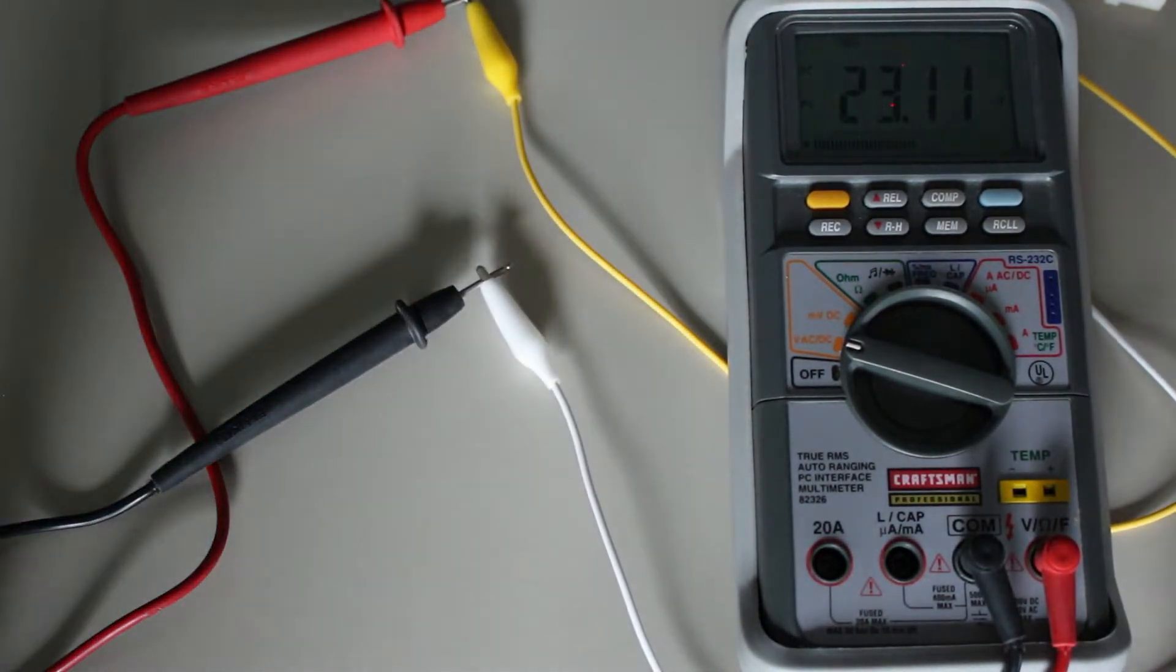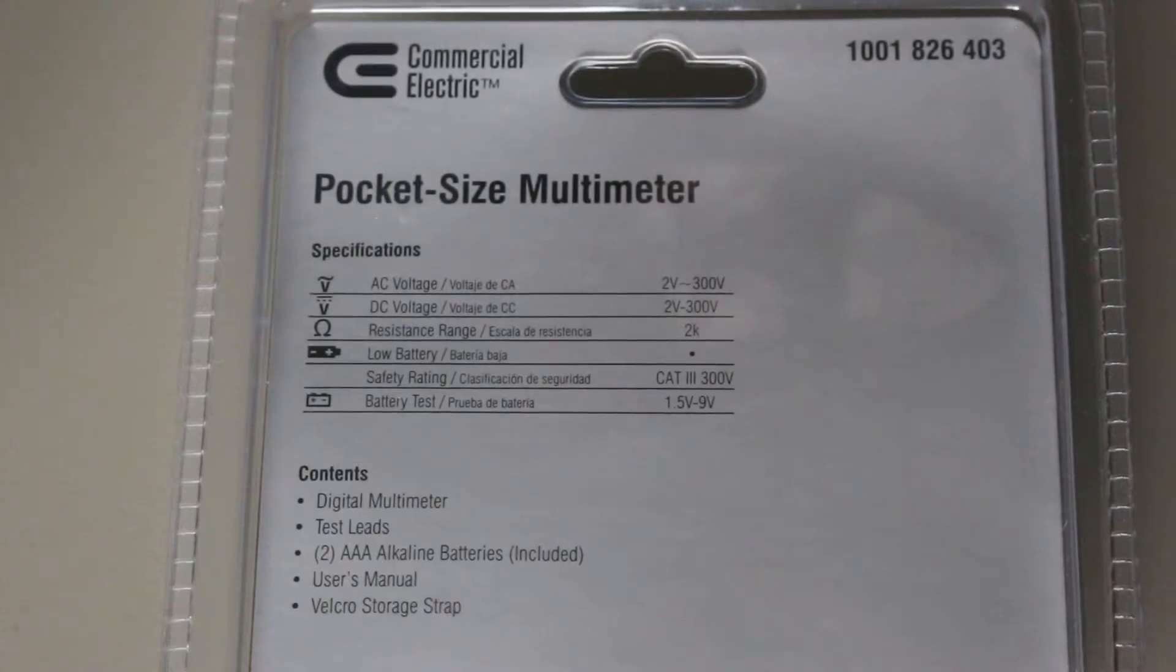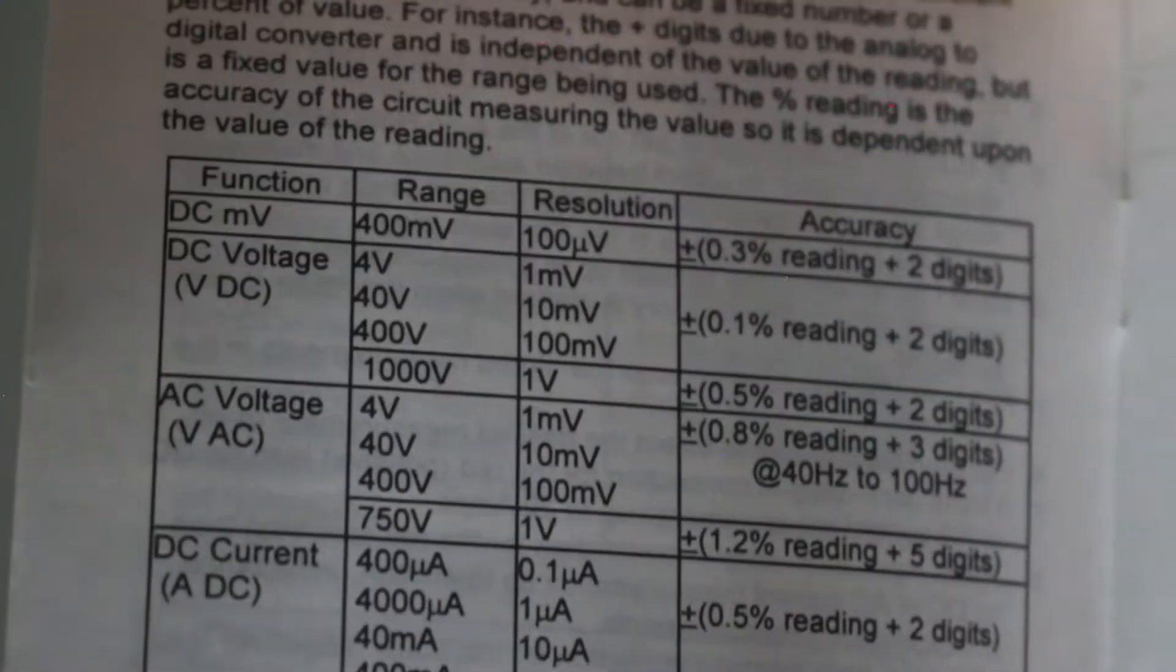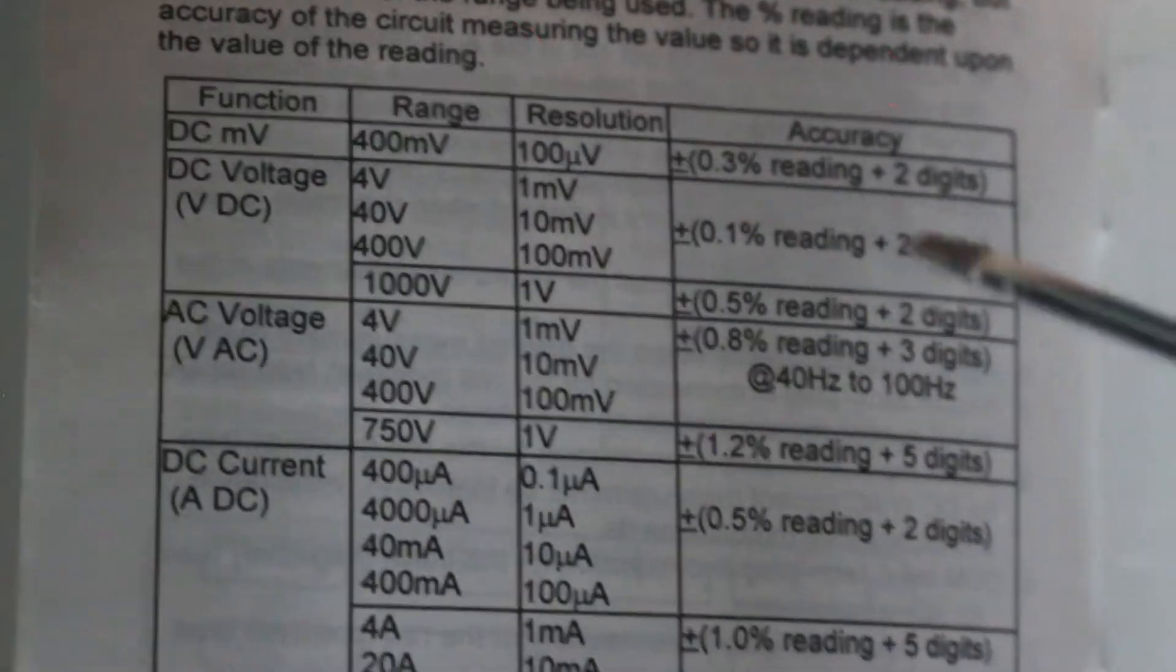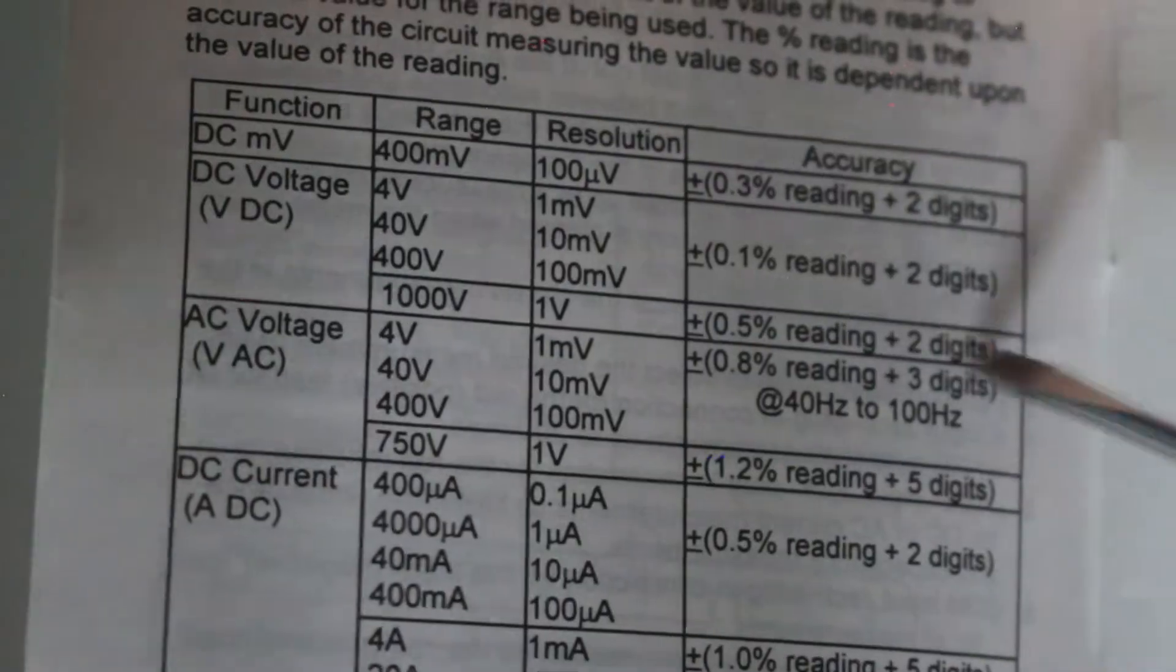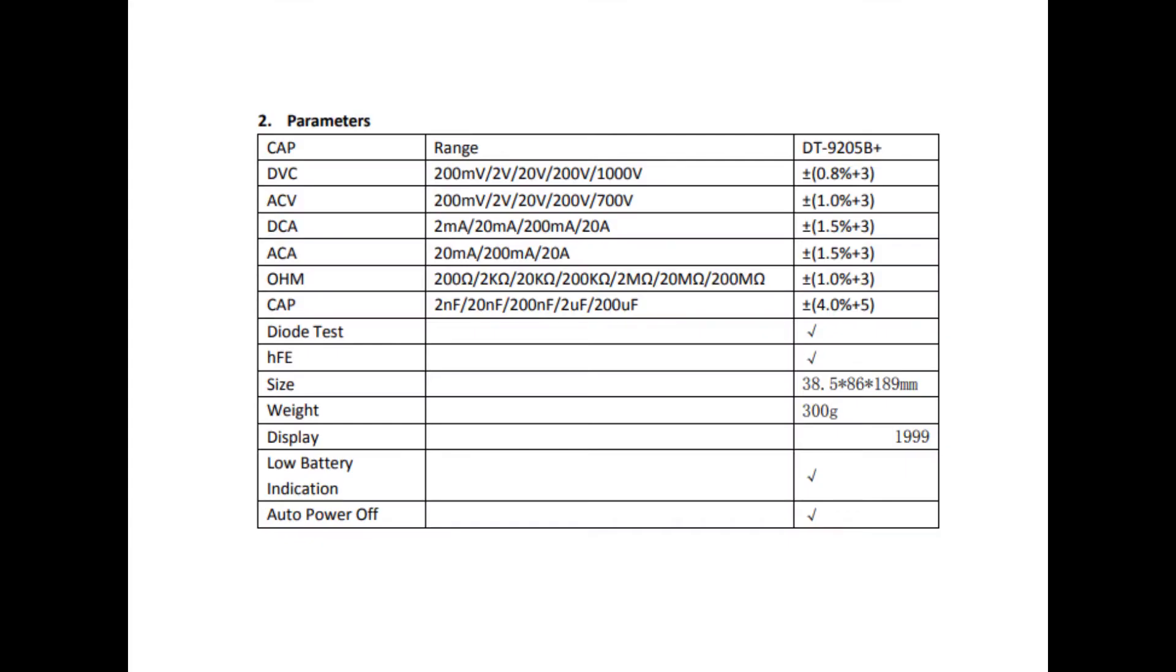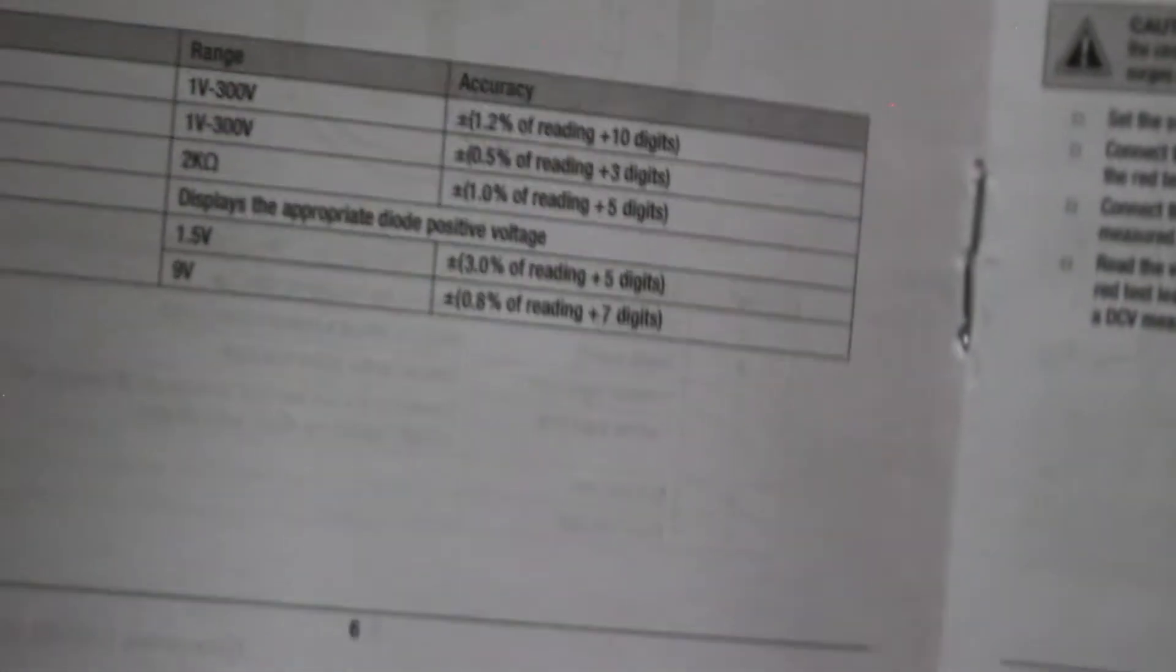The next important aspect is accuracy. For this test, we will be comparing the DC voltage accuracy, but you should still keep the other accuracies for current and resistance in mind. The two expensive ones have better accuracies, 0.1% and 0.3% respectively. This cheap one has an error of 0.8%, which is quite high compared to the others. And the pocket one has a DC error of 0.5%.